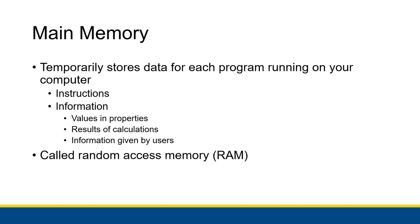Main memory — I believe we briefly talked about, and if you have taken CBiz 101, you are probably familiar with. But essentially, main memory temporarily stores data for each program running on your computer. When you turn your computer on, a whole bunch of stuff is put into main memory. It has all the instructions for programs that are running, and it holds information for those programs — any values that are in properties, results of calculations, or any information given by users.